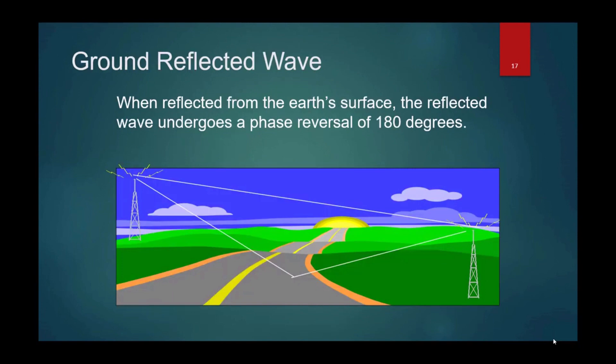Ground reflective wave. When reflected from the earth's surface, the reflective wave undergoes a phase reversal of 180 degrees. This can result in fading due to destructive interference between a direct wave in phase and a ground reflected wave in phase reversal. Once those two signals match up at the receiver, they can actually either help each other or destruct the signal to the point where the receiving antenna gets a deep fade.